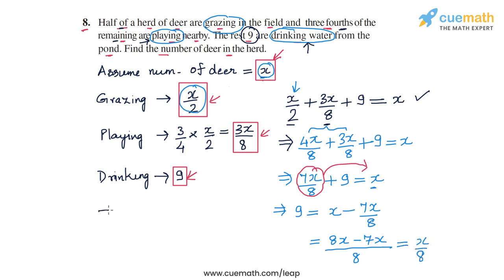So let's rewrite what we have so far. I have 9 on the left-hand side and x by 8 on the right-hand side. Let me write it as x by 8 equals 9.